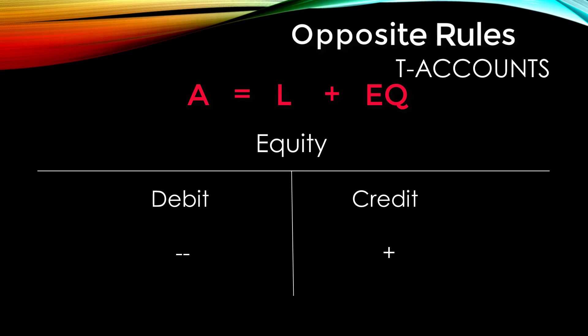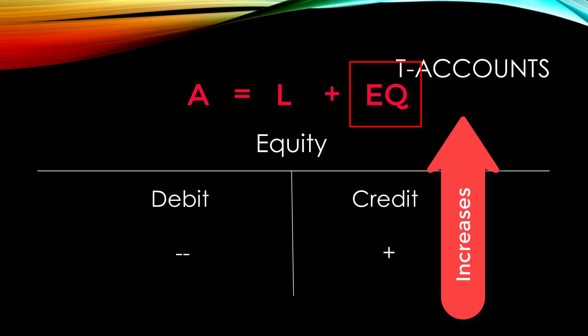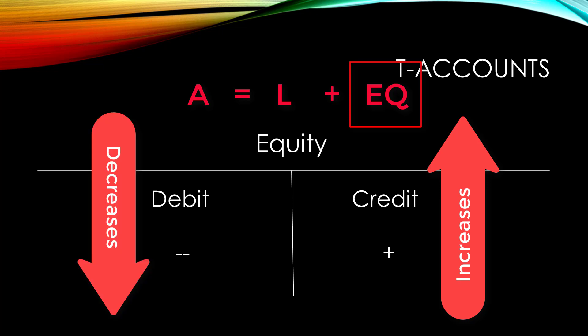Similar to liabilities, because equity falls on the other side of the equation it has the same rules as liabilities. That is, increases to equity accounts are on the credit side and decreases are on the debit side. And of course, debits have to equal credits always.